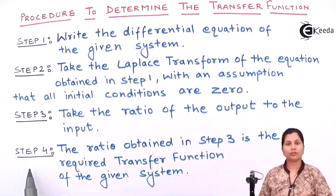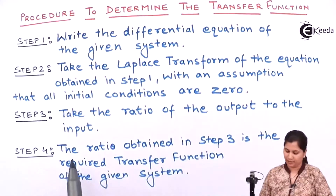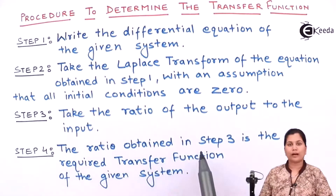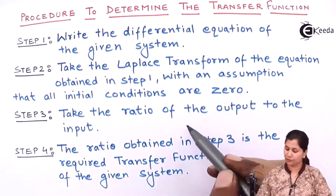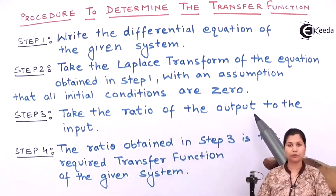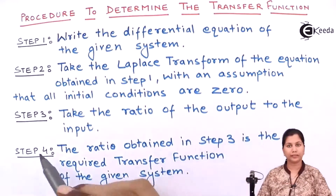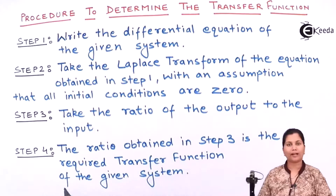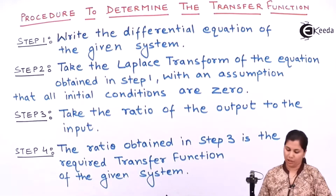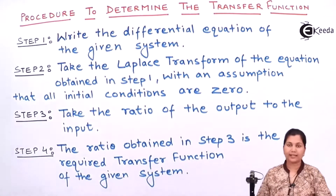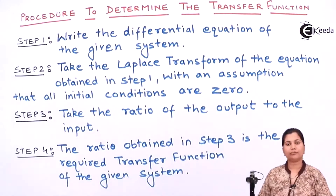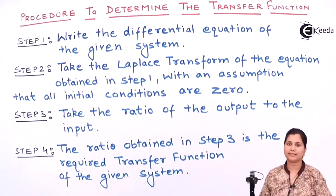So, the fourth step is: the ratio which you have obtained in step three, that is the ratio of the output to the input, is the required transfer function of the given system. These are the steps which you have to follow to determine the transfer function of a system.